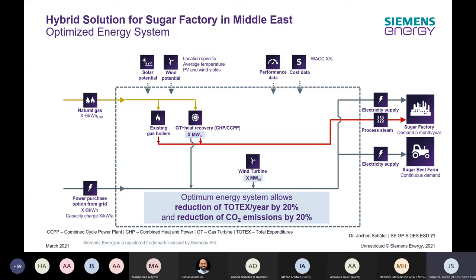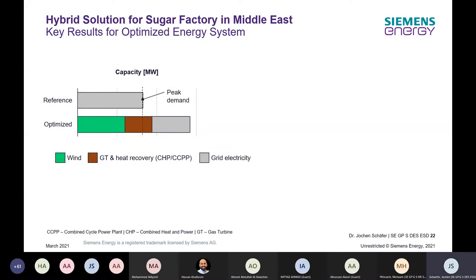The absence of solar PV gave us a headache initially, and we double-checked several times. We then understood it results from the unconventional load profiles of the sugar factory and farm: during the day there is not much electricity demand, so PV generation would largely require intermediate storage to be useful. Overall, we achieved a 20% TOTEX reduction and simultaneously a 20% CO2 emission reduction.